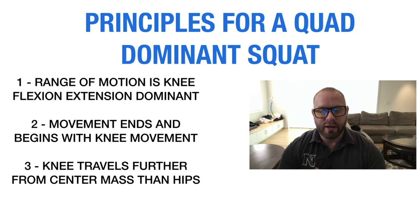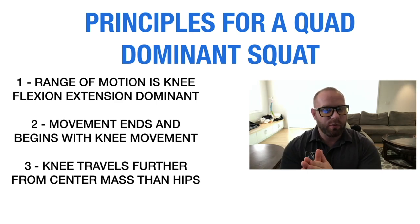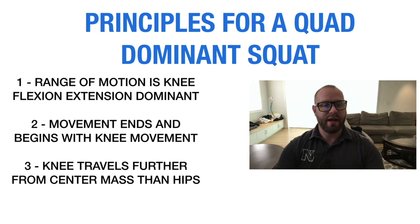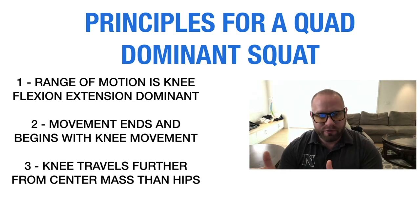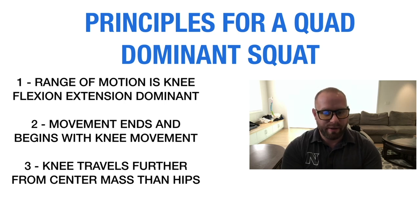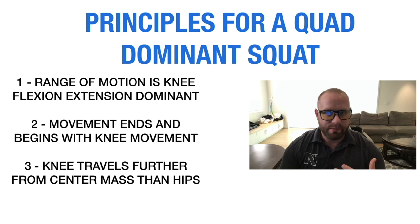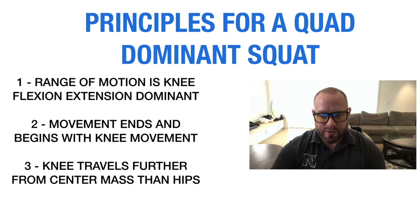Principle three: the knee travels further from the center of mass than the hips. The knees need to go forward more than the butt goes back. The joint that gets further away from center has a longer lever, meaning more torque must be exhibited around that joint. If the butt is further back there's more load at the hip; if the knee is further forward there's more load at the knee. Center of mass is essentially mid-foot, where we balance our load.